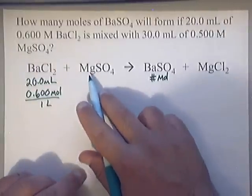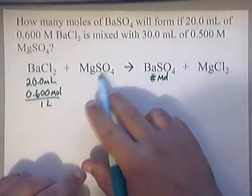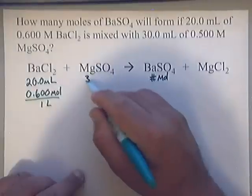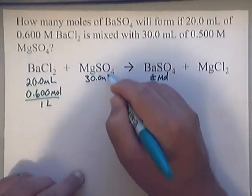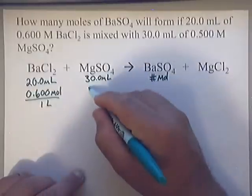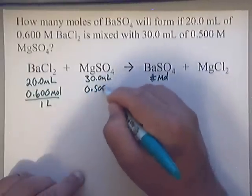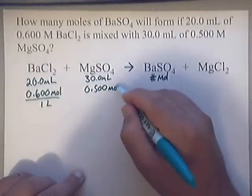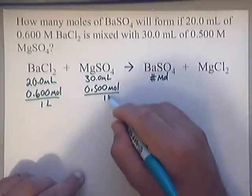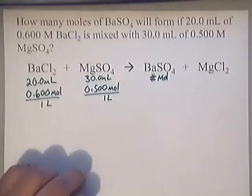Look at the MgSO₄. They tell me that they were going to give me 30.0 milliliters of it along with 0.500. But remember I'll write moles over 1 liter so I can use that as a conversion factor.